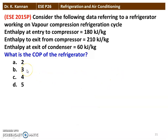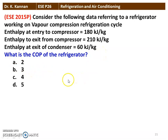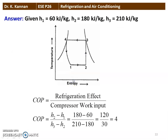The next question is from the 2015 question paper. Consider the following data for a refrigerator working on a vapor compression refrigeration cycle: enthalpy at entry to the compressor is 180 kJ/kg, enthalpy at exit from the compressor is 210 kJ/kg, and enthalpy at exit of the condenser is 60 kJ/kg. The COP of the refrigerator is 4.